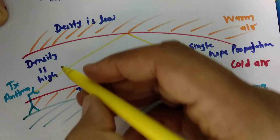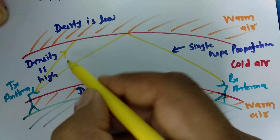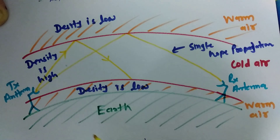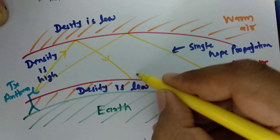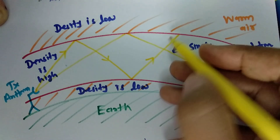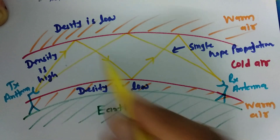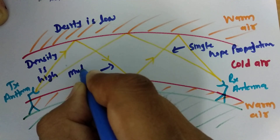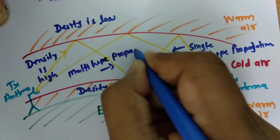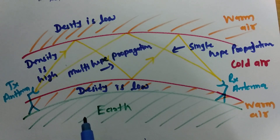In multi-hop propagation, we send a signal from the transmitting antenna. Because the signal enters from high density to low density, it gets reflected back. Then again at the next boundary there is a transition from high density to low density, so it gets reflected again, and once more at the next boundary. There are multiple hops happening, with reflection occurring three times in this example. This is multi-hop propagation, which happens because of multiple reflections.